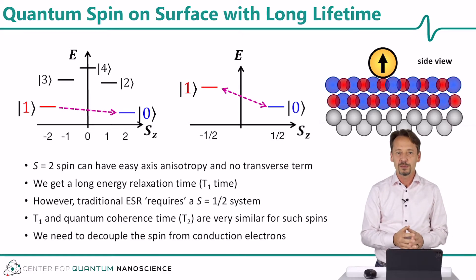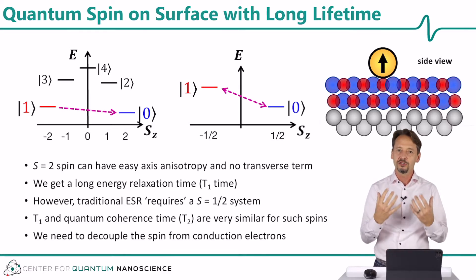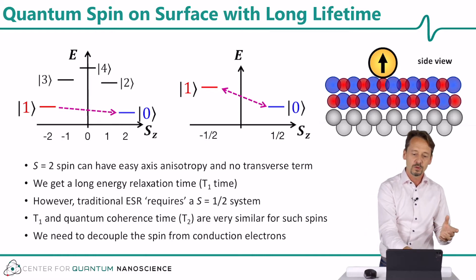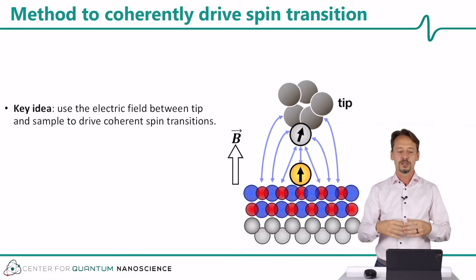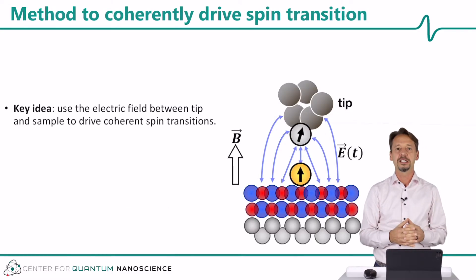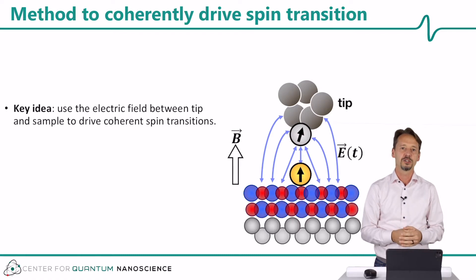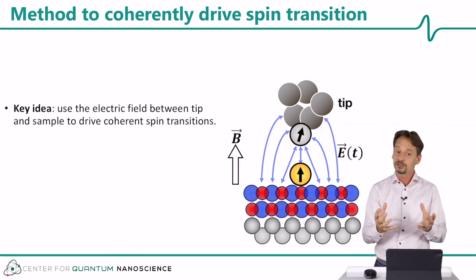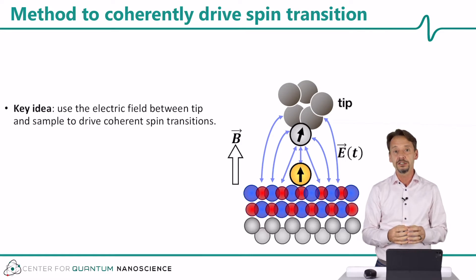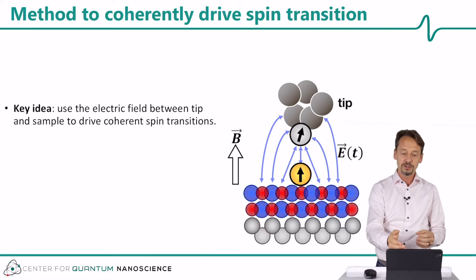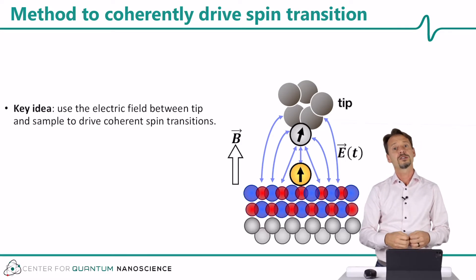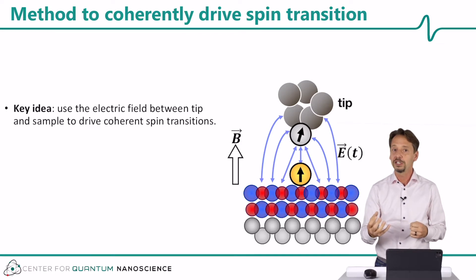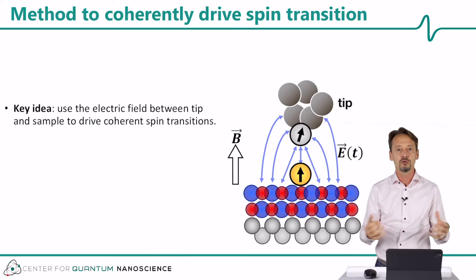The most important aspect to take away from this video is that we want to use very fast, time-dependent electric fields to drive electron spin resonance in the STM. This is because an electric field is relatively easy to achieve between the tip and the sample, whereas creating a magnetic field of equal strength is very difficult, and we still don't know how we could do this even in concept.